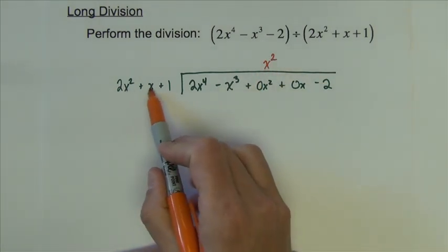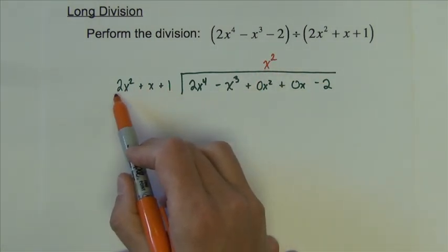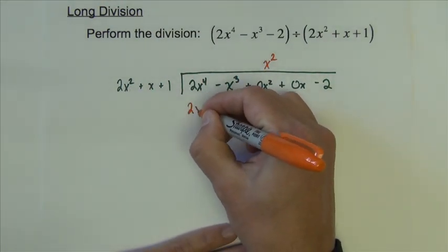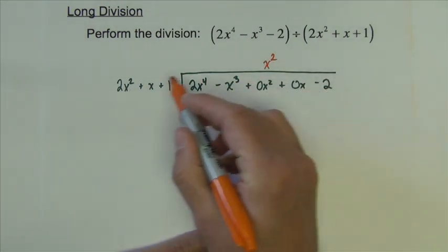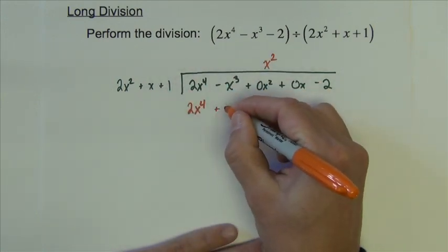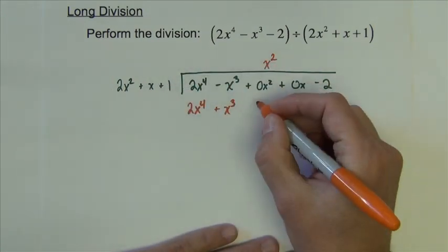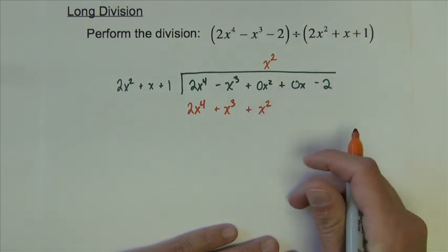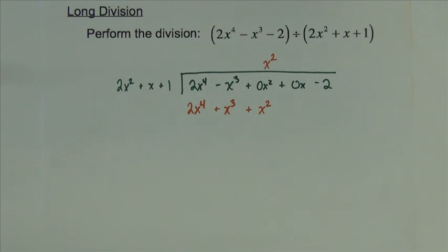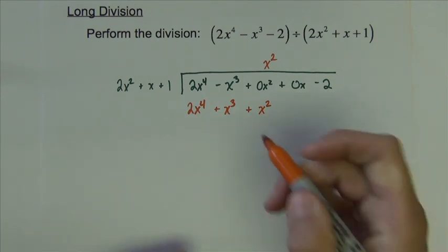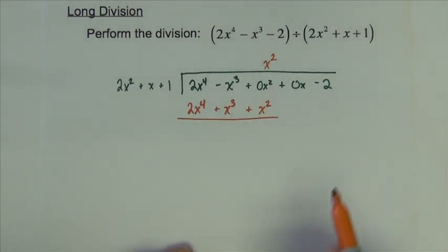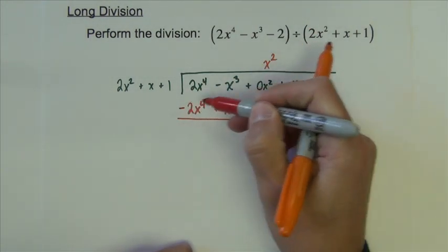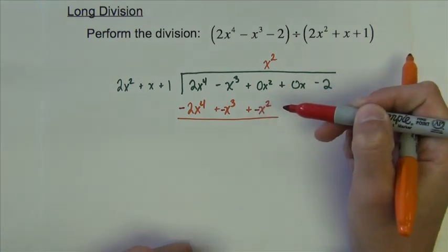So this x squared multiplies this polynomial, the divisor out here. So x squared times 2x squared is 2x to the fourth. x squared times x is positive x to the third. x squared times 1 is positive x squared. And then if you remember anything about your division of numbers in elementary school, you are now going to take away this row from this one. So I'm going to subtract this, subtract, and subtract.